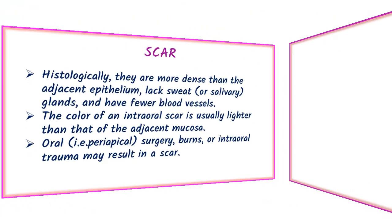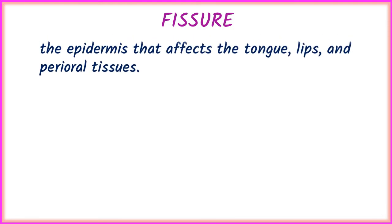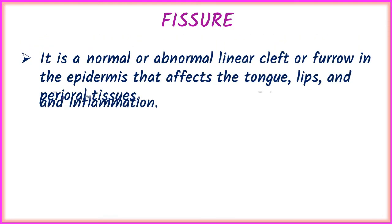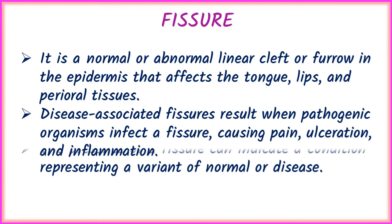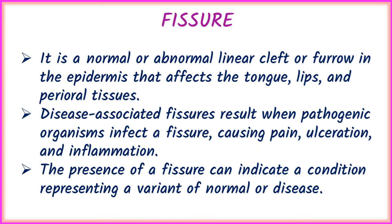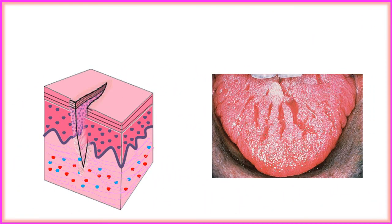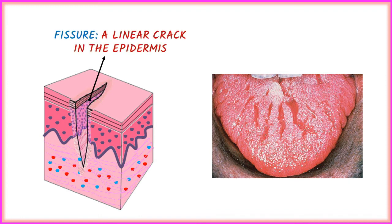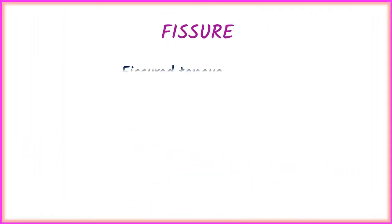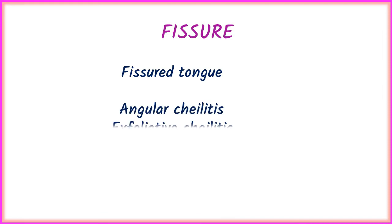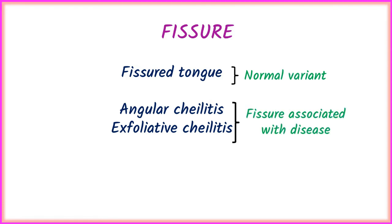The next term is fissure. It is a normal or abnormal linear cleft or furrow in the epidermis that affects the tongue, lips, and perioral tissue. Disease-associated fissures result when pathogenic organisms infect a fissure, causing pain, ulceration, and inflammation. Oral conditions showing fissuring include fissured tongue, angular cheilitis, and exfoliative cheilitis. Fissured tongue is a normal variant, while the other two are associated with disease.